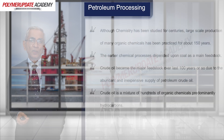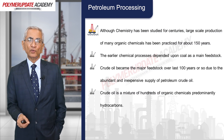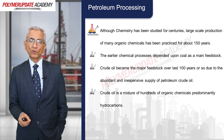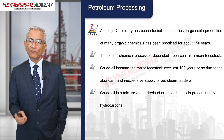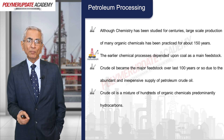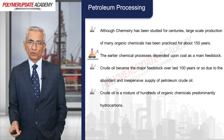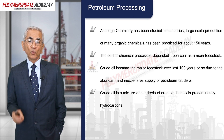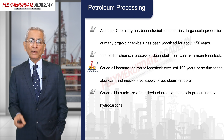Although chemistry has been studied for centuries, large-scale production of many organic chemicals has been practiced only for the last 150 years. The earlier chemical processes depended mainly upon coal as the main feedstock. Crude oil became the major feedstock over the last 100 years or so due to the abundant and inexpensive supply of petroleum.